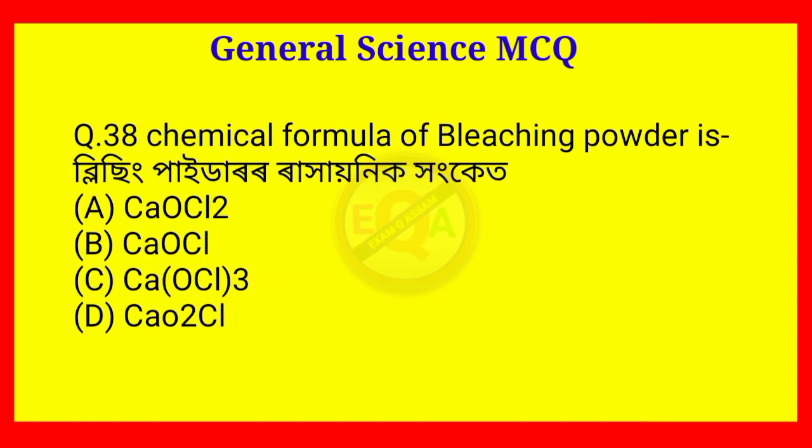Question number 38. What is the chemical formula of bleaching powder? The answer is Option A — CaOCl2.